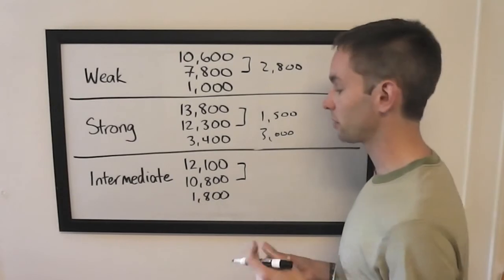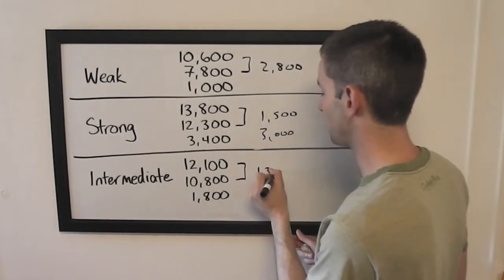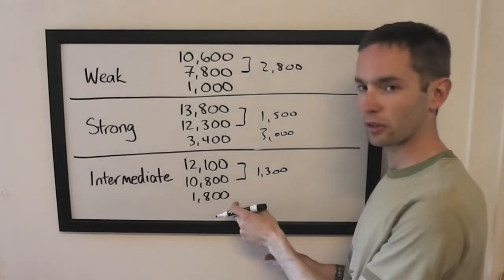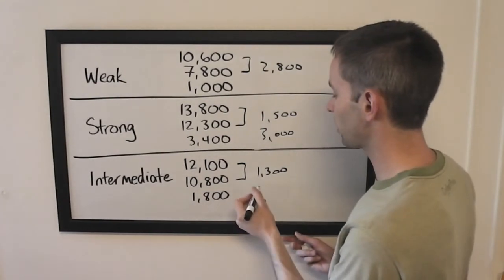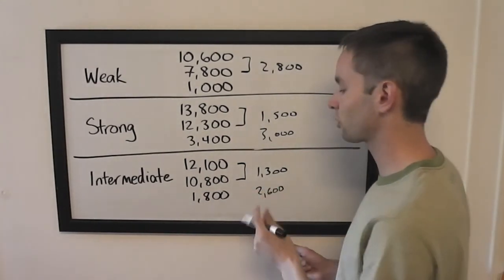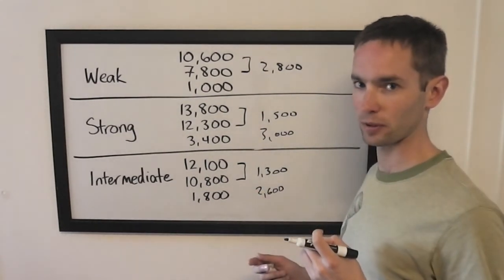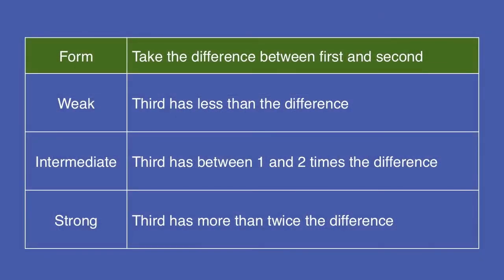And in the intermediate form, as you might expect, it's in the middle. The difference is 1,300, which is less than what third place has, which is good. But third place doesn't have quite twice the difference between first and second. Therefore, third is in contention, but will need to get it right and wager enough to have a chance in final.